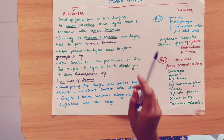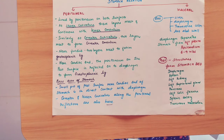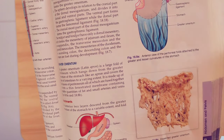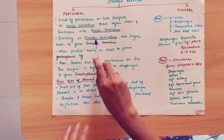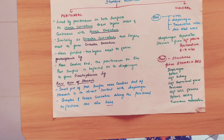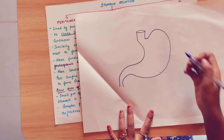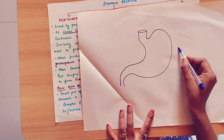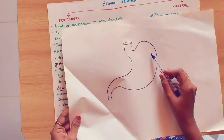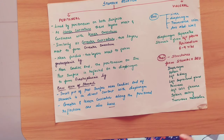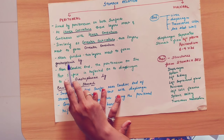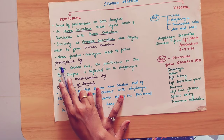Similarly, at the greater curvature, two layers meet to form the greater omentum. Near the fundus, two layers meet to form the gastrosplenic ligament. The spleen has a double layer from the stomach — that is called the gastrosplenic ligament. Gastro means stomach, spleen means spleen.